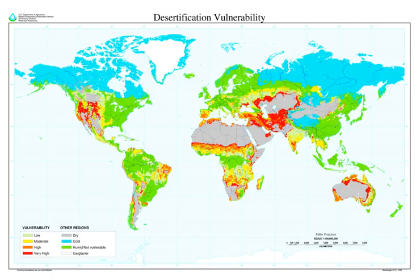The world's most noted deserts have been formed by natural processes interacting over long intervals of time. During most of these times, deserts have grown and shrunk independent of human activities. Paleodeserts are large sand seas now inactive because they are stabilized by vegetation, some extending beyond the present margins of core deserts, such as the Sahara, the largest hot desert.